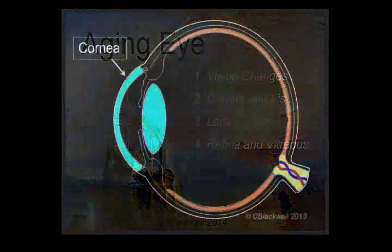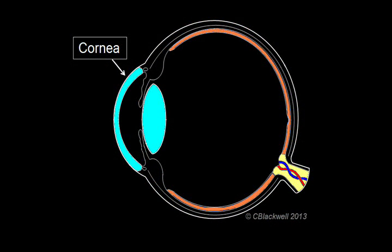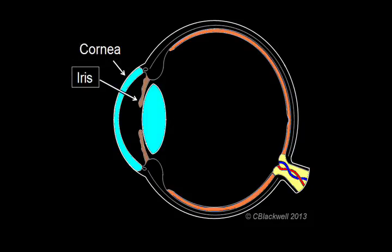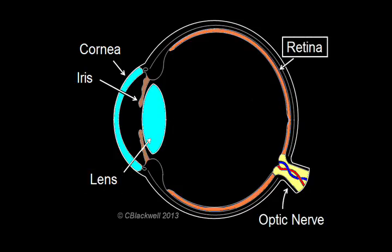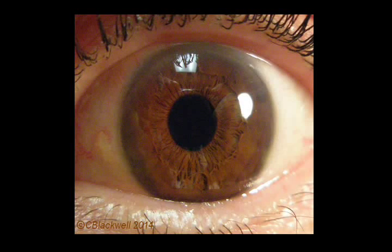To get you oriented, the cornea is the clear window in the front of the eye. The iris is the colored structure which regulates how much light gets into the eye. Behind the iris is the lens, just like the lens in a camera. Lining the inside is the retina which records the image like the film in a camera. Because the lens is behind the iris, you usually can't see your own lens by looking in a mirror.